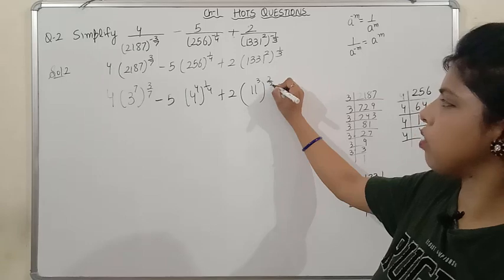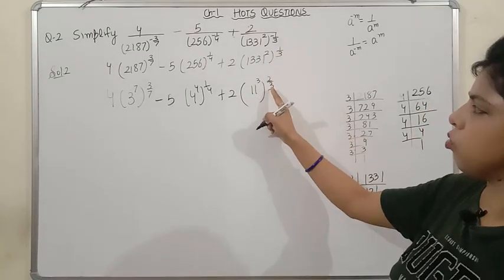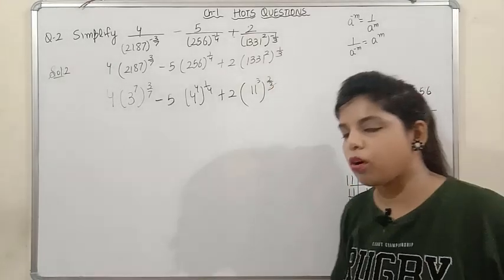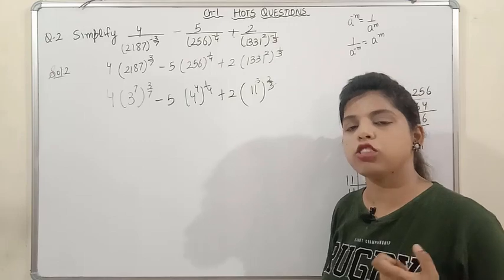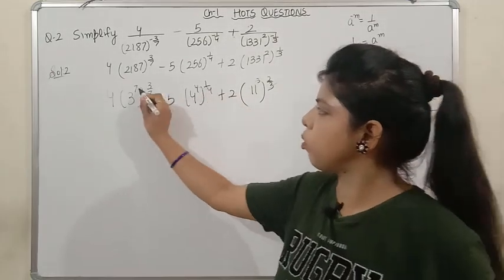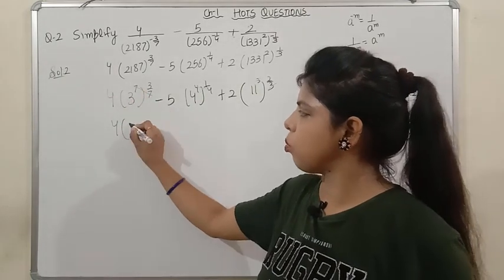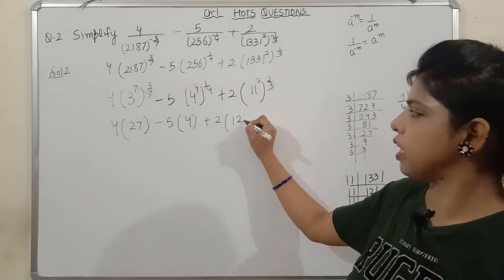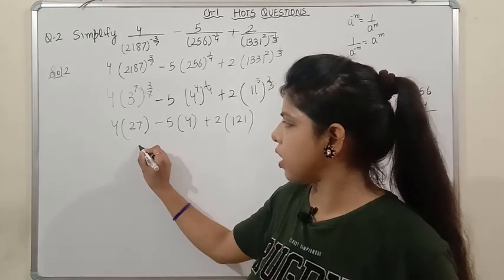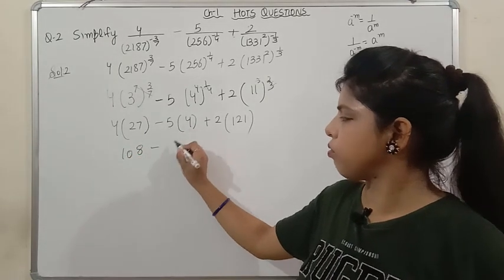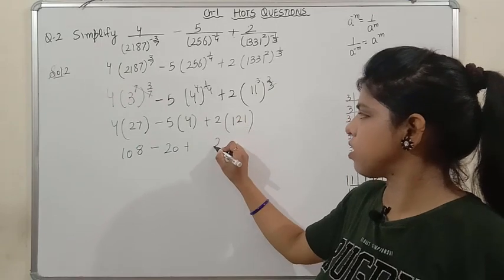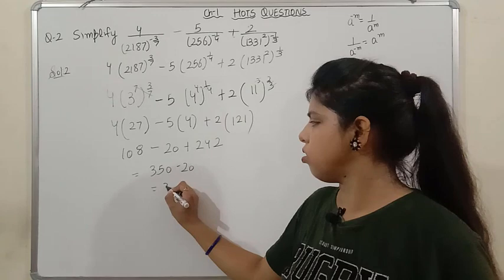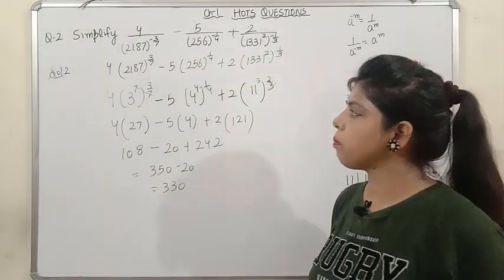All the fractional powers are now removed. Substituting: 4 × 27 − 5 × 4 + 2 × 121. Wait — 11^1 = 11, and 11^2 = 121 for the square. So: 4 × 27 = 108, minus 5 × 4 = 20, plus 2 × 121 = 242. Therefore 108 − 20 + 242 = 330. The key takeaway: when powers are negative, first make them positive.